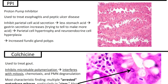Next up we've got PPIs, or proton pump inhibitors, used to treat esophagitis and peptic ulcer disease. They inhibit parietal cell acid secretion, leading to less stomach acid, which leads to increased secretion of gastrin to compensate, leading to parietal cell hypertrophy and neuroendocrine cell hyperplasia. This can lead to an increased incidence of fundic gland polyps — those dilated glands and spaces you can see with PPIs, but also seen in fundic gland polyps.